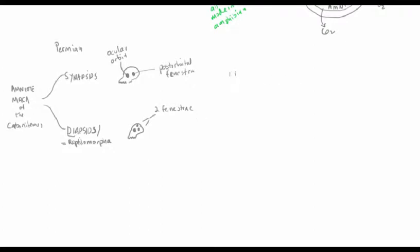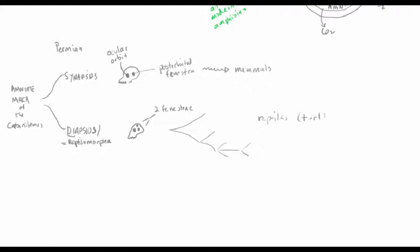Following these lineages of amniotes, the synapsids pretty much give rise to mammals and mammals only, whereas the diapsids diversify — we see a lot more variation. The reptilomorph group includes all different kinds of reptiles: turtles, lizards and snakes, crocodilians, and also birds. The more interesting and diverse of these two lineages is really the diapsida, although we have a special place in our hearts for mammals, and we will develop that part of the story as well.